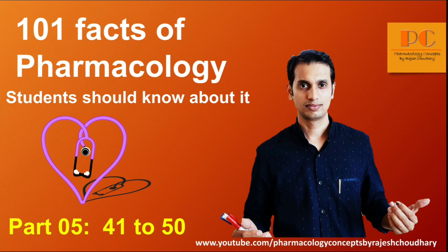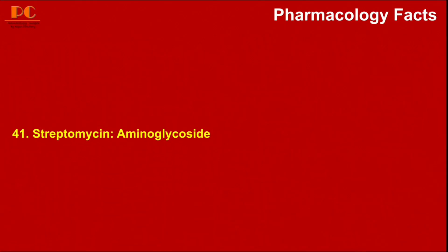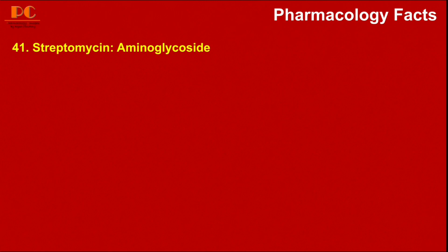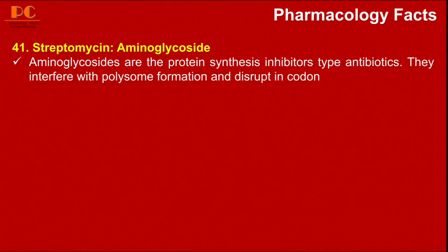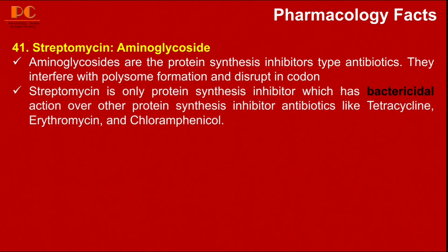The first fact is about Streptomycin. It is an aminoglycoside type antibiotic. Aminoglycosides are protein synthesis inhibitor type antibiotics — they interfere with polysome formation, disturb the codon reading, and act on the 30S ribosomal unit. The key fact is that Streptomycin is the only protein synthesis inhibitor with bactericidal action, unlike others such as tetracycline, erythromycin, and chloramphenicol.